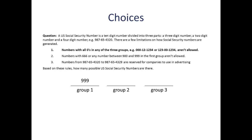The first group is a three-digit number excluding 000, so that leaves us with any of the numbers from 001 to 999 — that's 999 numbers. Rule 2 excludes numbers starting with 666, taking our choices from 999 down to 998. Rule 2 also excludes any number in the first group between 900 and 999, which is another 100 numbers, taking us from 998 down to 898.